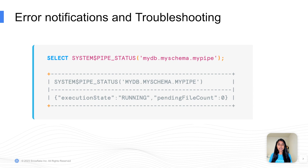When Snowpipe encounters an error during a load, it pushes the notification to a configured cloud messaging service. However, the error notifications only work when the on_error copy option is set to skip file. To understand more about your error, query the status of the pipe using the system function pipe_status.